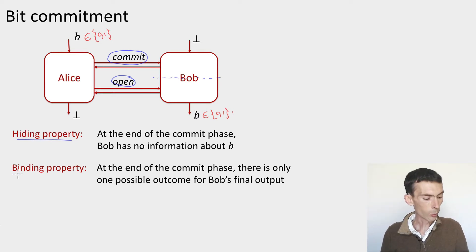And then there's the binding property, which is that at the same point, Alice can no longer change her mind. So in the commit phase, she gets to decide if she wants to commit to b or b prime, she can commit to whatever she wants. But once both parties have reached that stage here, Bob still doesn't know anything about b, but Alice can't change her mind any longer. And so there's a subsequent phase called open, through which Bob is going to end up learning the value b that Alice committed to in the commit phase.